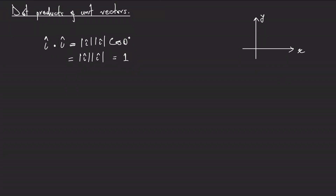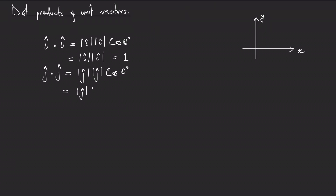The same is true for j-hat dot j-hat. J-hat is a unit vector pointing in the positive y direction. We have two vectors both pointing in the positive y direction with magnitude one. From the definition, this is the magnitude of j-hat times the magnitude of j-hat times cosine of zero, which equals one times one times one. Since j-hat is a unit vector its magnitude is one, so j-hat dot j-hat equals one.